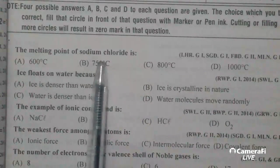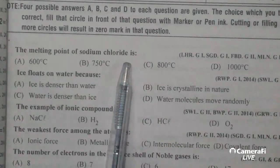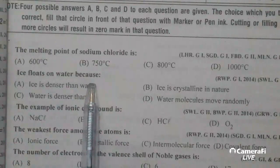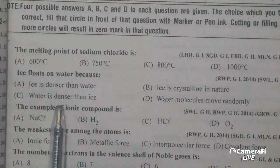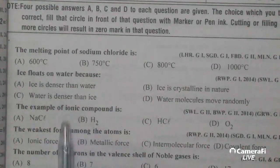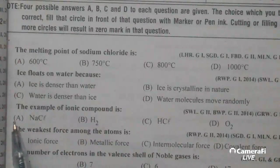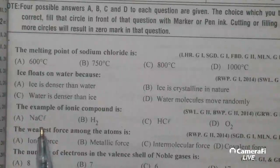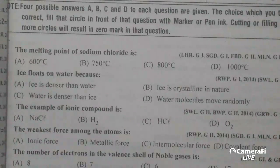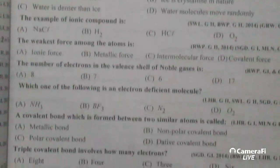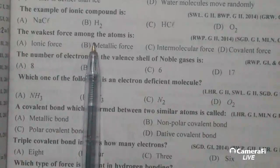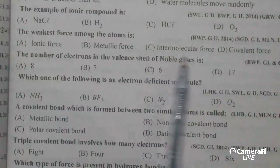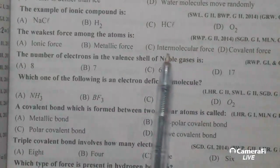The melting point of sodium chloride is 1800 degree centigrade. Ice floats on water because water is denser than ice. The example of ionic compound is NaCl.